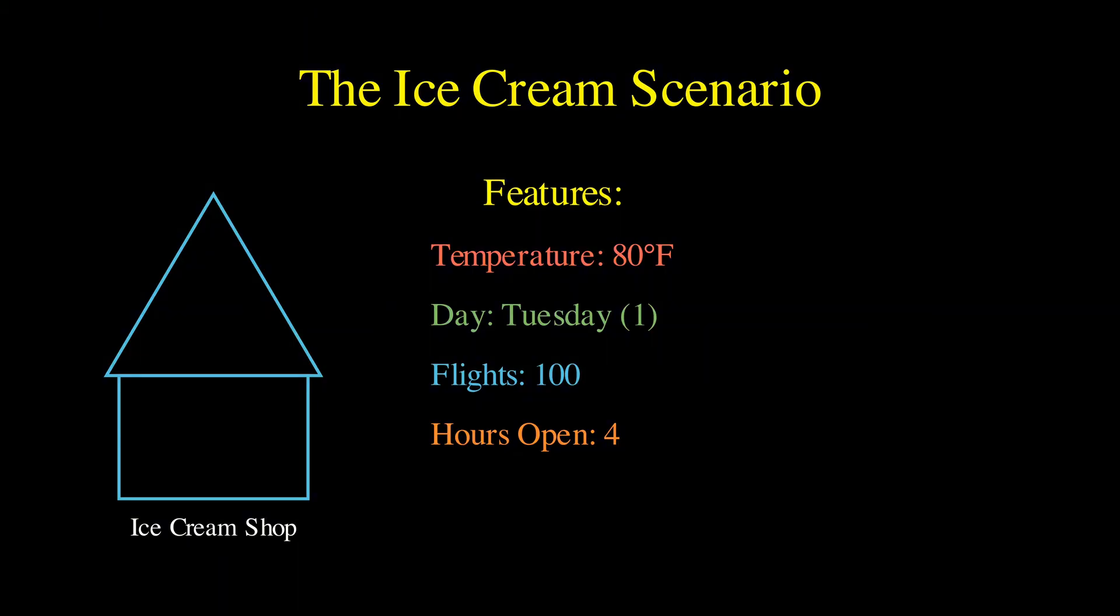And let's say for a specific day, your model predicts you will sell 1000 cones. But here's the catch. You know that on average, across all days, your model predicts sales of 2000 cones.